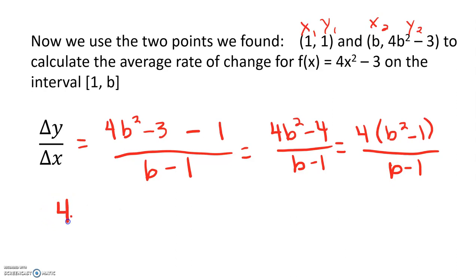Now I see that b² minus 1 is a difference of two perfect squares, which factors to (b + 1)(b - 1), all over b minus 1. The b minus 1 reduces to 1, leaving us with 4b plus 1.